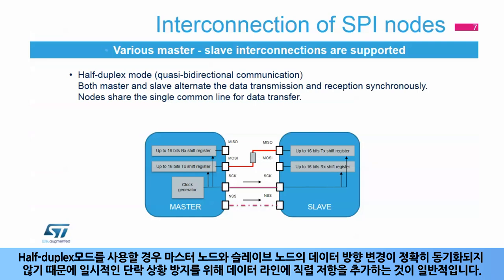The master and slave have to alternate their transmitting and receiving roles synchronously when using this common data line. It is common to add a serial resistor on the half-duplex data line to prevent possible temporary short-circuit connections, since the reconfigurations of the data directions at master and slave nodes are not usually synchronized.